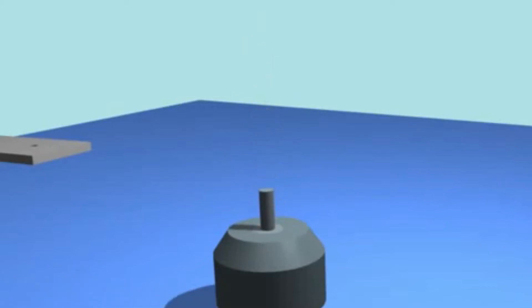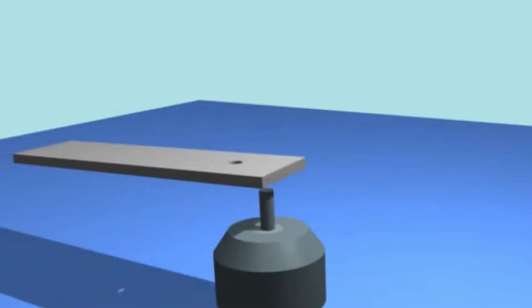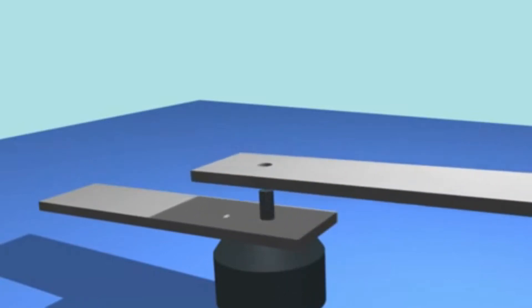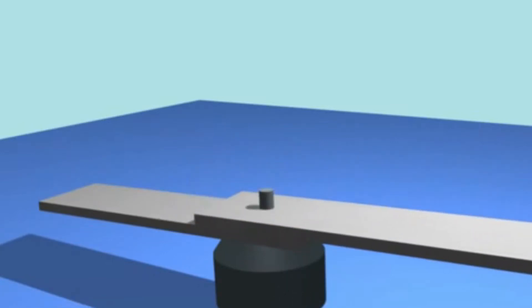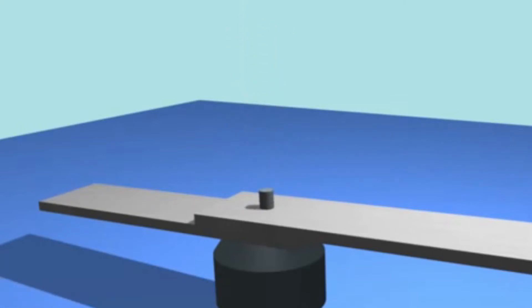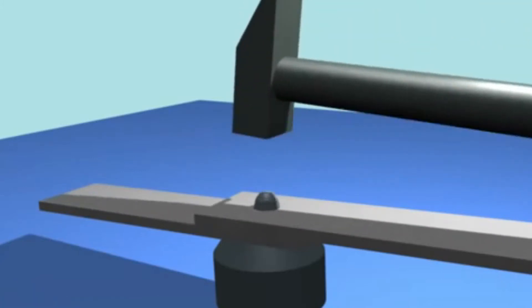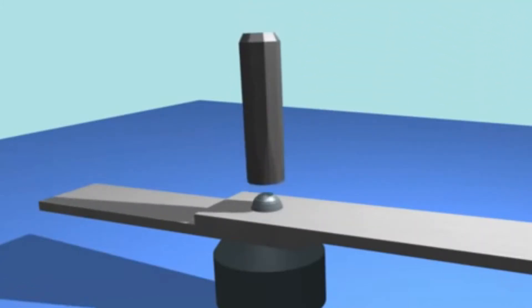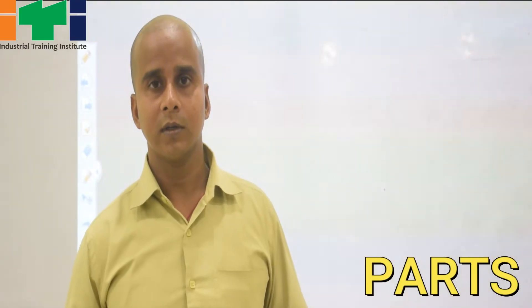Riveting is a method of permanent metal joining, by which two metal sheets can be joined together permanently. For riveting, the metal sheets are drilled before rivets are inserted into the hole.